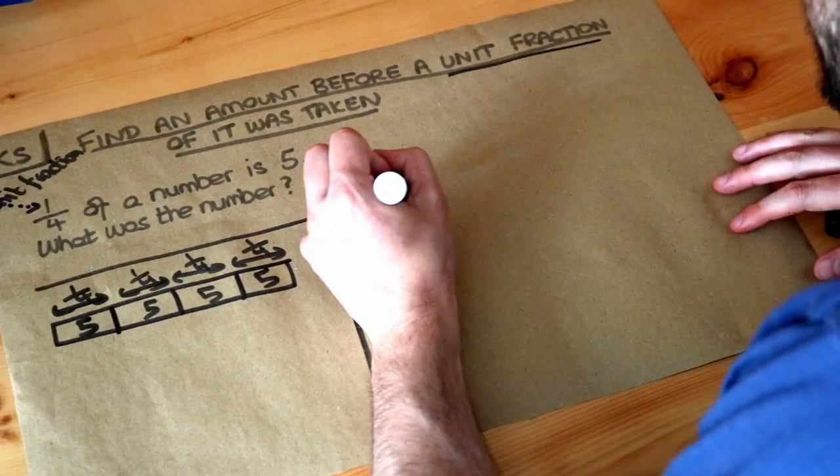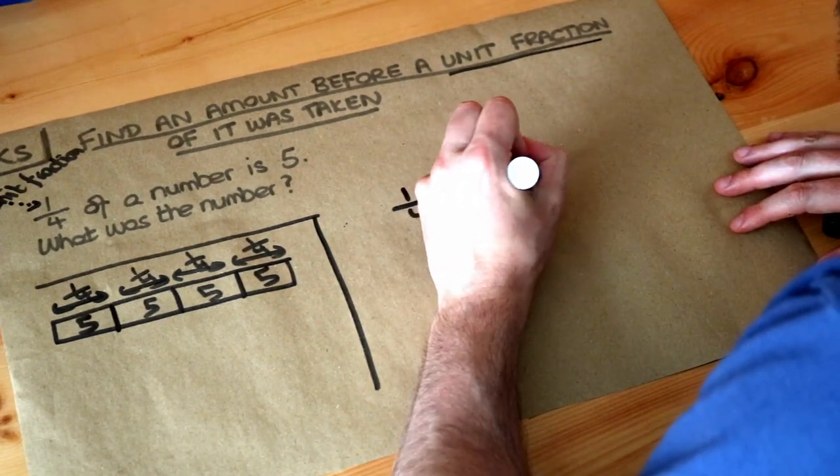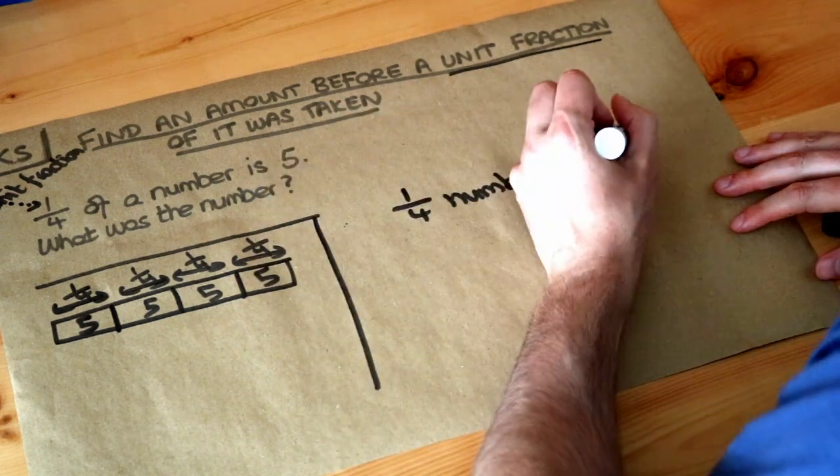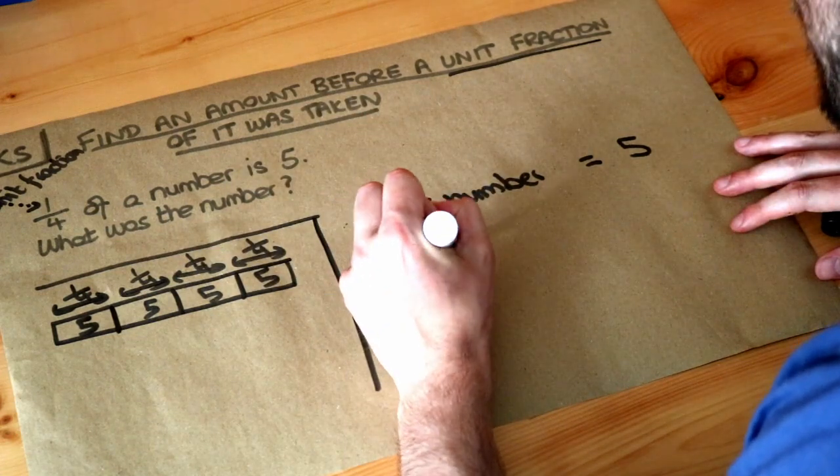But the way we're going to write it is like this. So we're going to say a quarter of the number is equal to 5, and we want to work out all of the number. So I'm going to write all of the number.